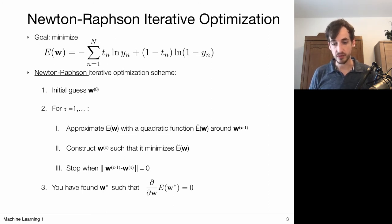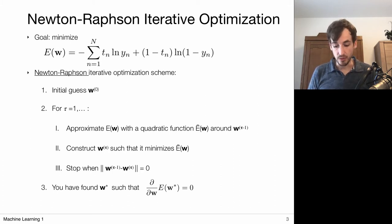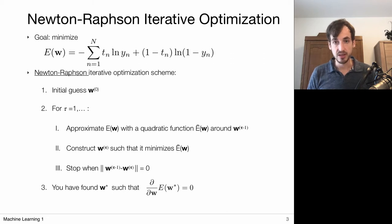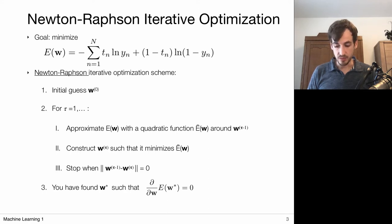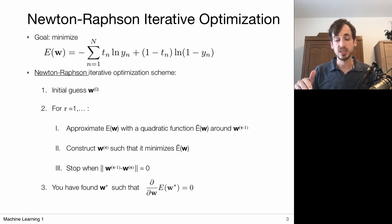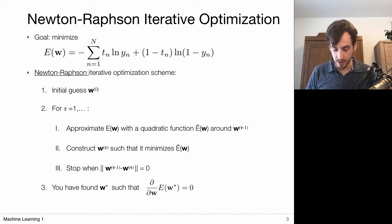The Newton-Raphson iterative optimization scheme is in a way similar to stochastic gradient descent, mainly in that we have an iterative scheme where we start with an initial guess and update model parameters w at each step. Now we're going to make a quadratic estimation of the error function, whereas previously we used the gradient, which essentially gives us a linear approximation of the function.